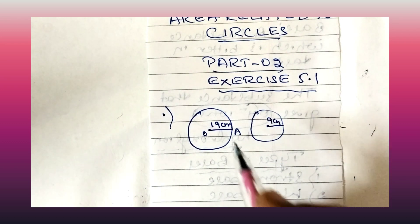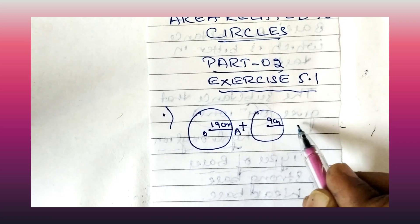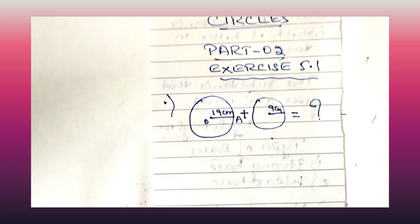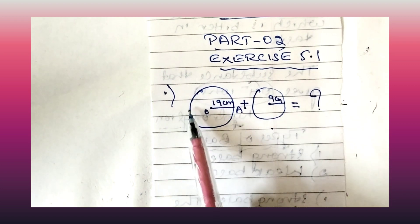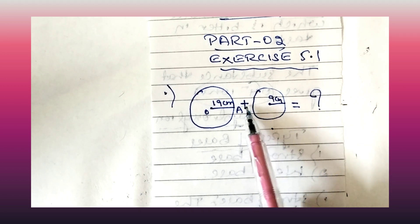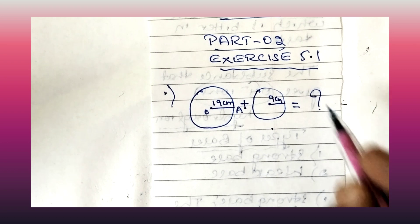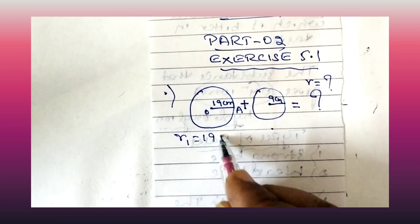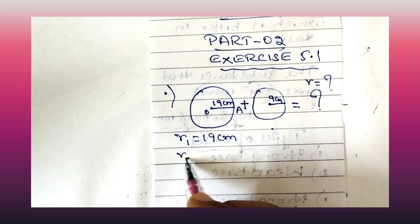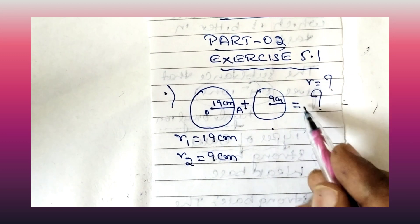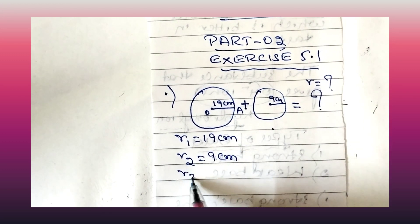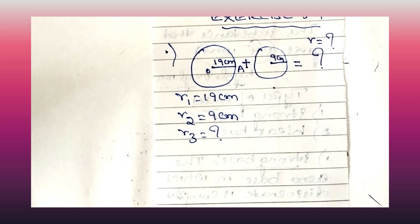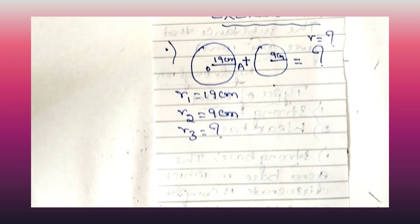We have to find out the radius of a third circle whose circumference equals the sum of the circumferences of these two circles. Let r1 be the radius of the first circle, which is 19 centimetre, r2 the radius of the second circle, which is 9 centimetre, and r3 the radius of the third circle which we have to find.